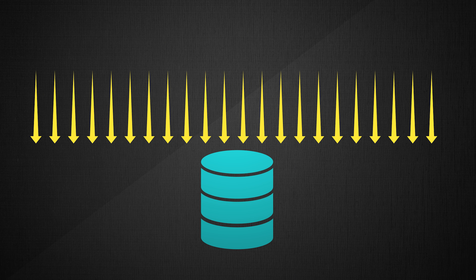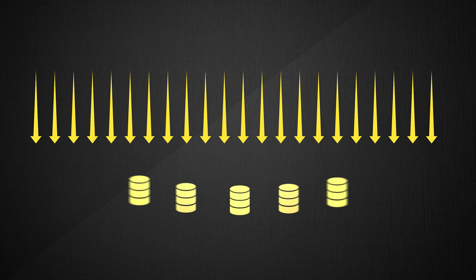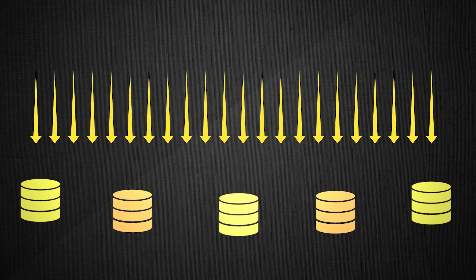To improve the state of the database, we can vertically scale it by making it more powerful. But vertical scaling is limited, so the natural next step is to scale it horizontally, meaning to add more database servers.